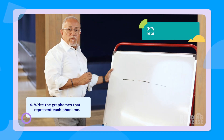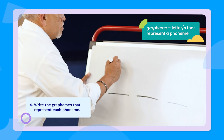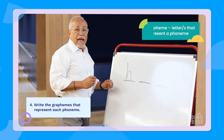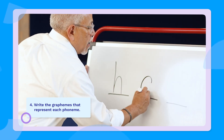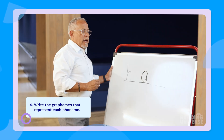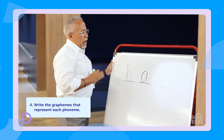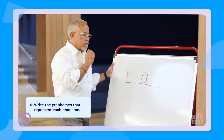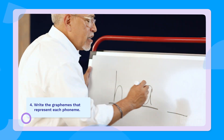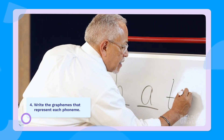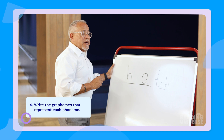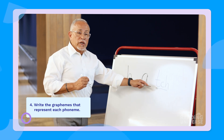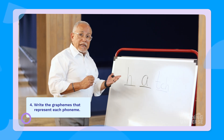Which grapheme represents that H sound? The H. Which grapheme represents that A? A. And what about that final phoneme there, CH? Which grapheme represents that sound? It has to be T-C-H, because after a short vowel sound, the CH is represented by the letters T-C-H.